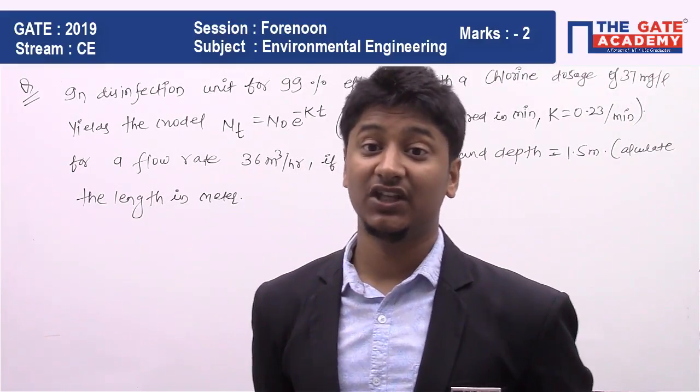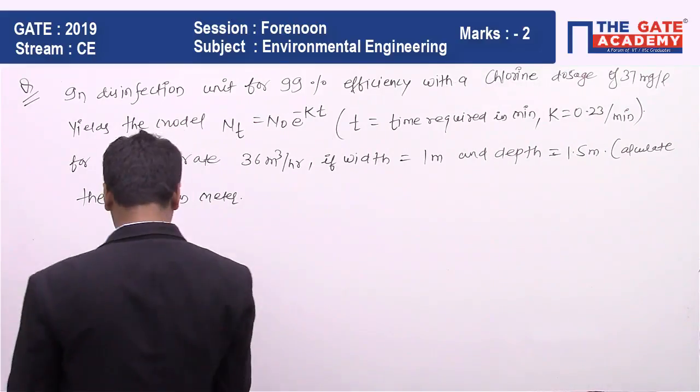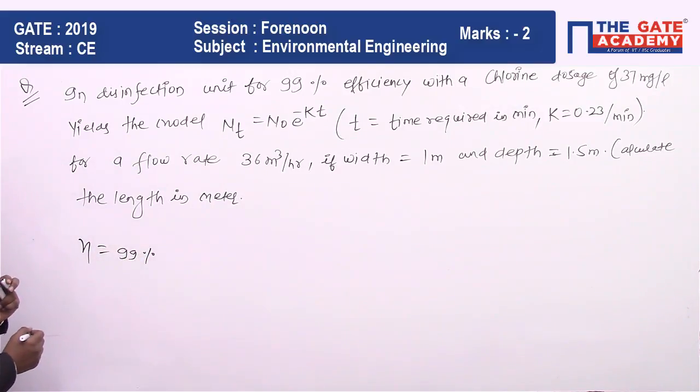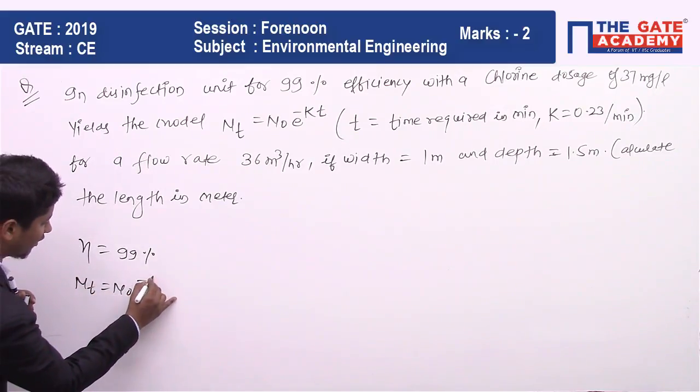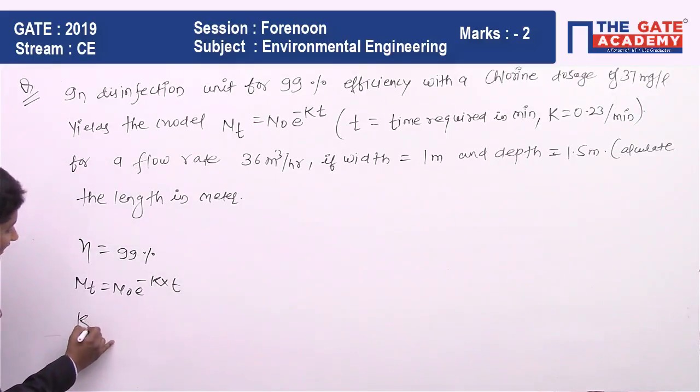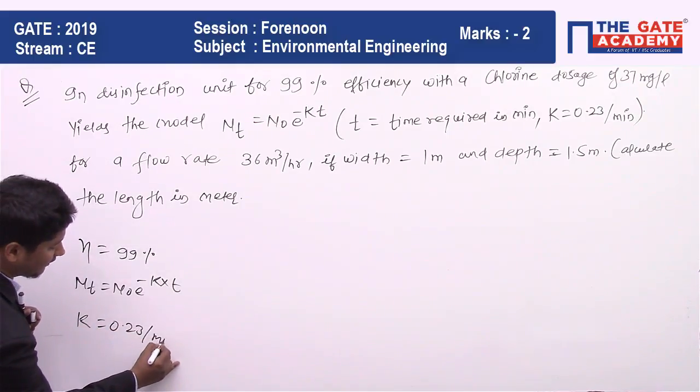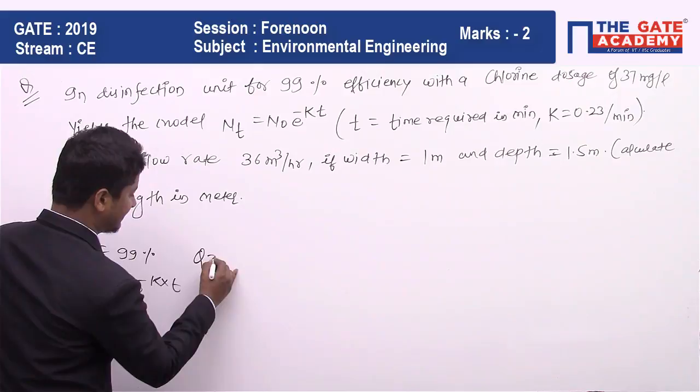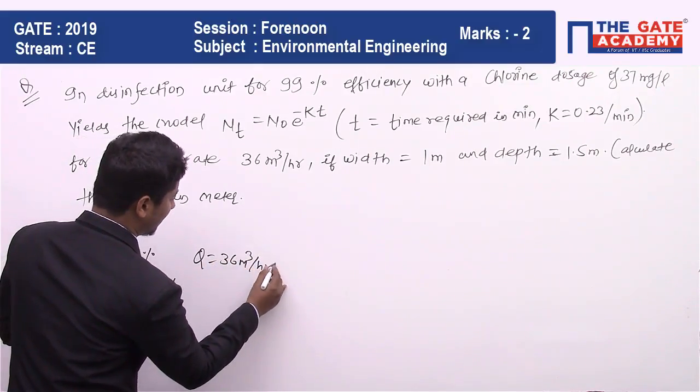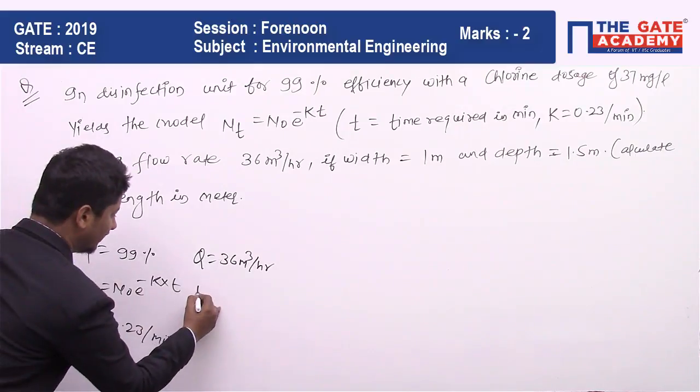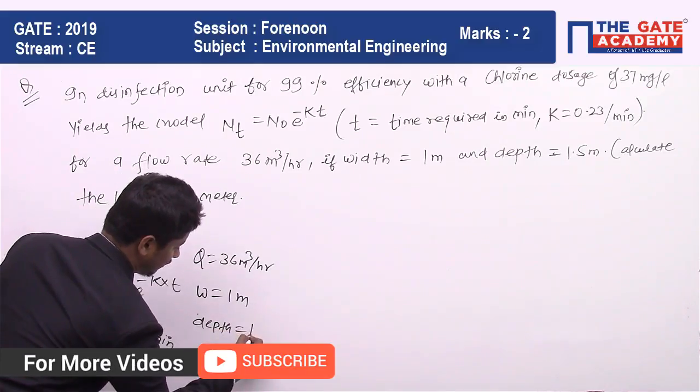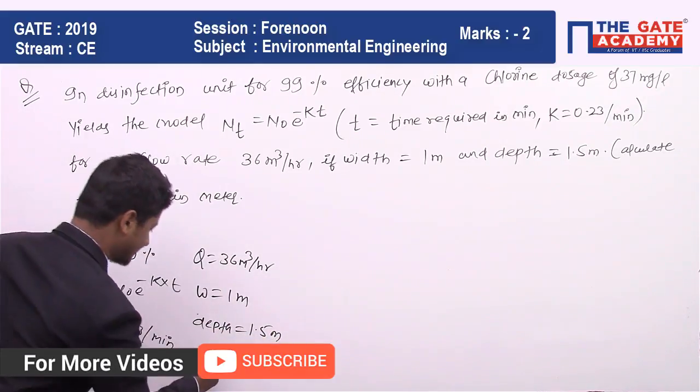So what are the data we have? Efficiency is given, that is 99%. Chemical kinetics: NT is nothing but equal to N₀ e to power minus K into T. K is given, I think that is 0.23 per minute. And Q is given, that is 36 meter cube per hour. Width is given, that is 1 meter. Depth is given, that is 1.5 meter. And they are asking you nothing but what will be the length.